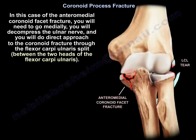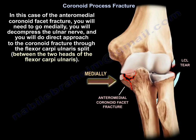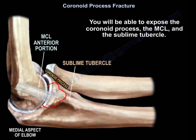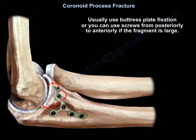For the anteromedial facet fracture, you will need to go medially. You will decompress the ulnar nerve and do a direct approach to the coronoid fracture through the flexor carpi ulnaris split. You will be able to expose the coronoid process, the MCL, and the sublime tubercle. Usually use buttress plate fixation, or you can use screws from posteriorly to anteriorly if the fragment is large.